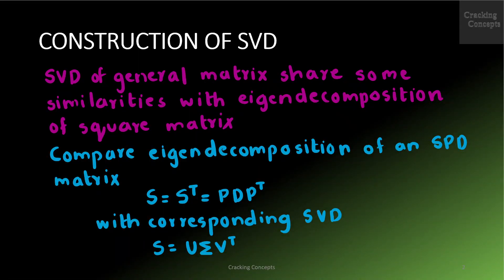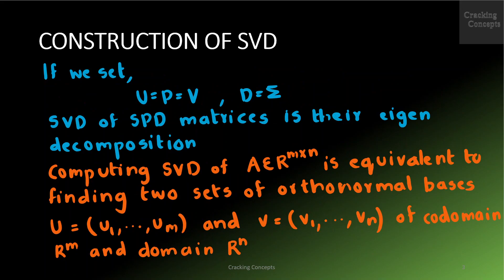SVD of a general matrix shares some similarities with the eigen decomposition of a square matrix. Compare the eigen decomposition of a symmetric positive definite matrix S = S^T, given by P D P^T, with the corresponding SVD S = U Σ V^T. If we set U = P = V and D = Σ, we see that the SVD of a symmetric positive definite matrix is its eigen decomposition.